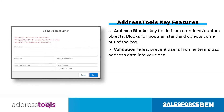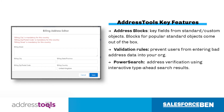The validation rules provided in the package range from checking postal code formats to making certain address fields required on a per-country basis. The package also comes with type-ahead power search functionality, which presents the user with verified addresses in five keystrokes or less.